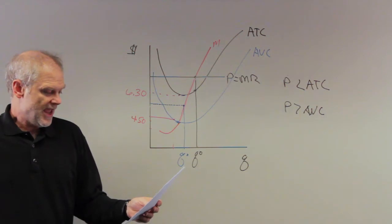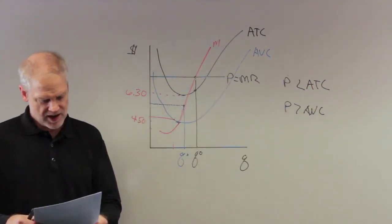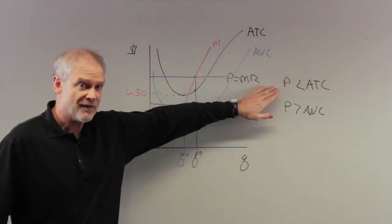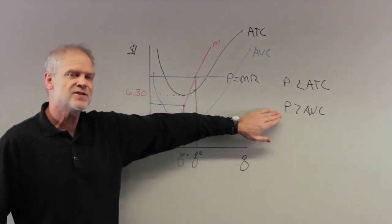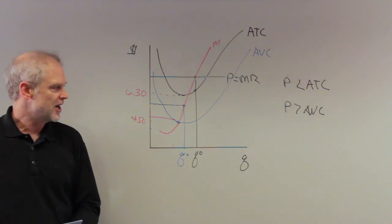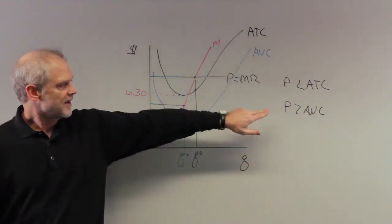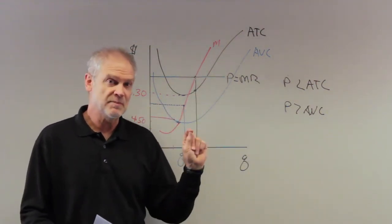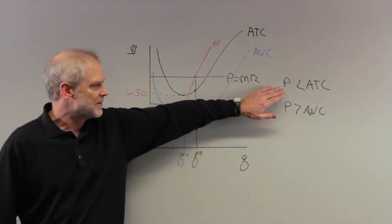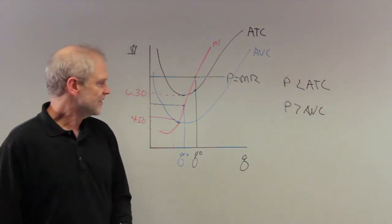Let's check the choices. A: positive economic profits — no, price is clearly below average total cost. B: negative economic profits in the short run but remain in business — yes, it's making negative economic profits because price is below ATC, but it stays in business because price is greater than average variable cost. C: negative economic profits and shut down — the negative profits part is correct, but the firm won't shut down because price exceeds average variable cost. D: zero economic profits — wrong, because zero profits require price equal to ATC. The answer is B.